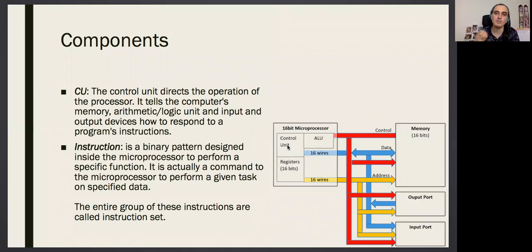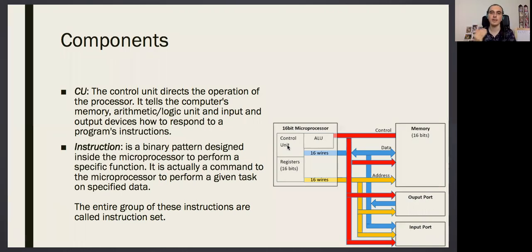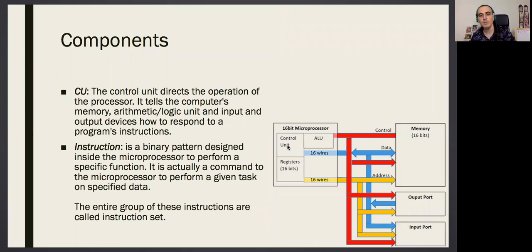The control unit is the brain that controls every operation. We talk directly to the control unit using assembly language. You give it an instruction — for example, 'add this register to that register' — and the control unit understands it, puts the necessary bits in place, and controls the other components to complete the operation. We will build a sample architecture in the first week.